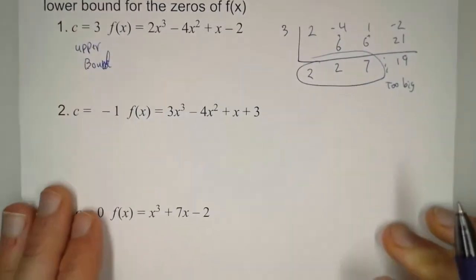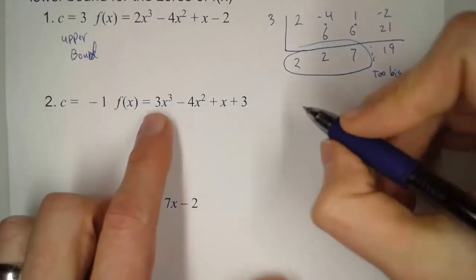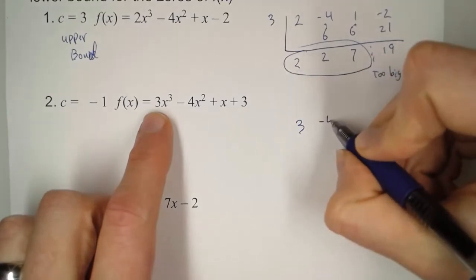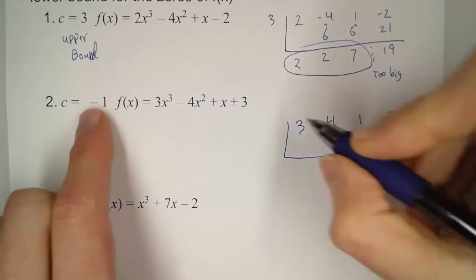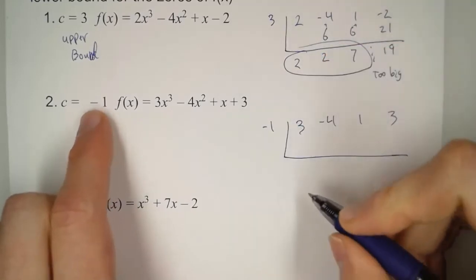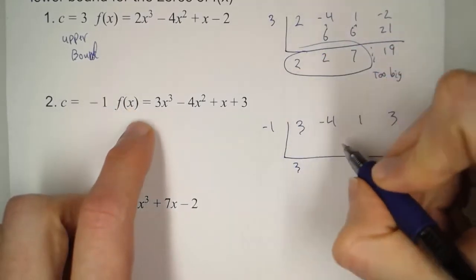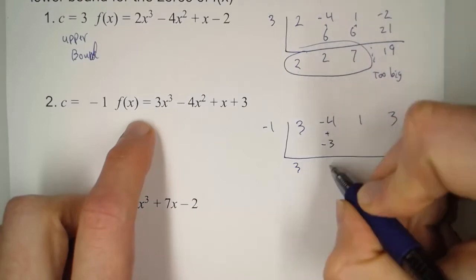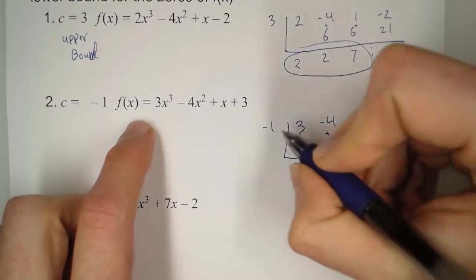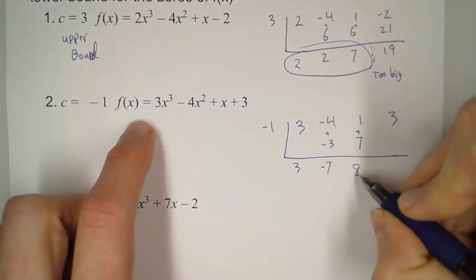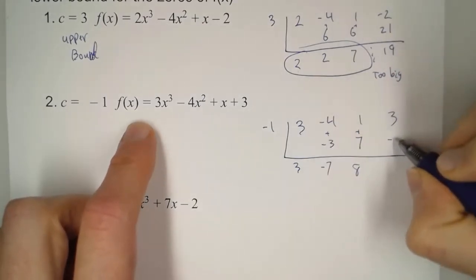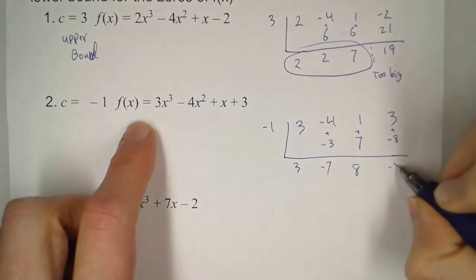Now for the next one, here we've got 3, negative 4, 1, and 3. So here we've got negative 1. Bring down the 3. Times negative 1 is negative 3. Add them, we get negative 7. Times negative 1 is 7. Add them, we get 8. Times negative 1 is negative 8. We get negative 5.